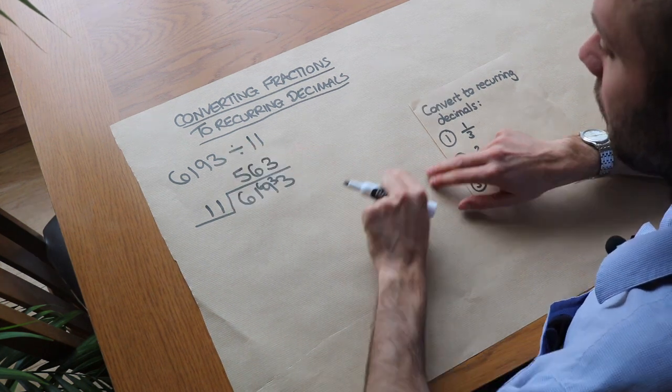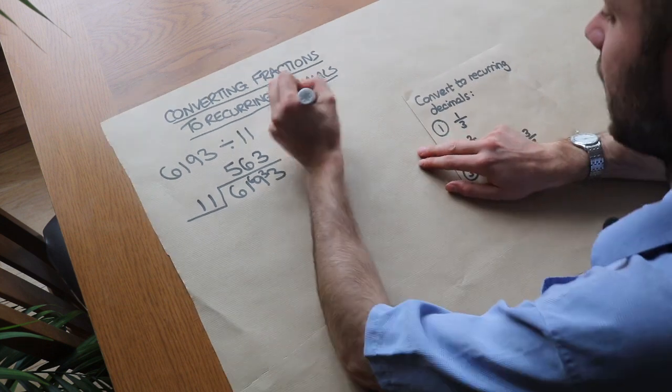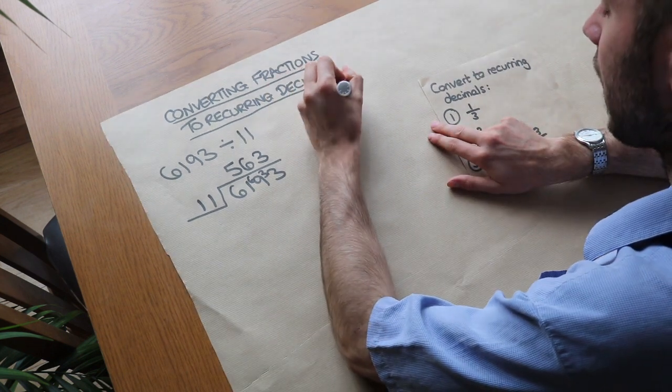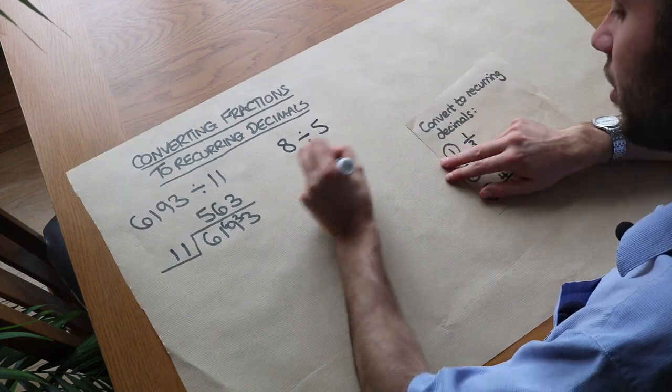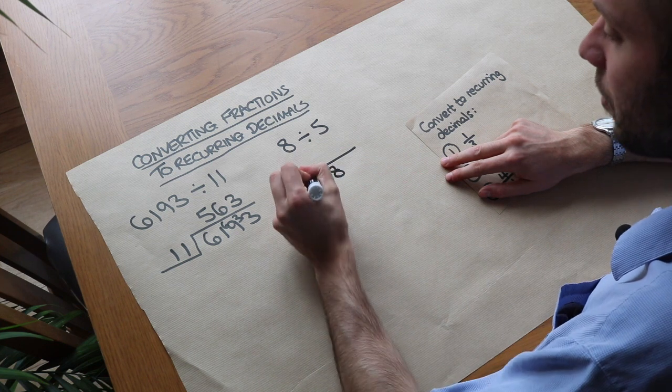Now if there was a remainder, we just put remainder something. But let's just say we were doing 8 divided by 5. We have a way of doing that, even though 5 doesn't go exactly into 8. So if we do the usual thing, 8 is being divided by 5.